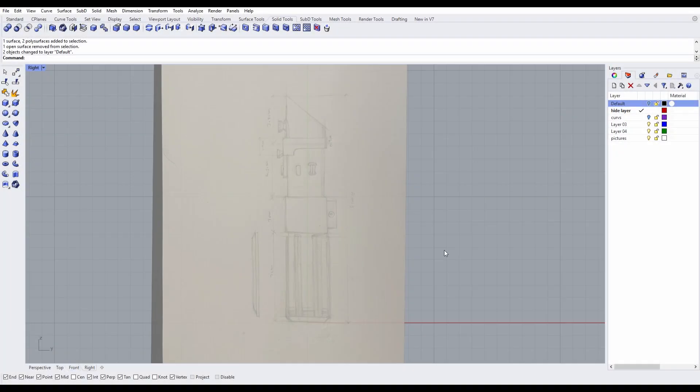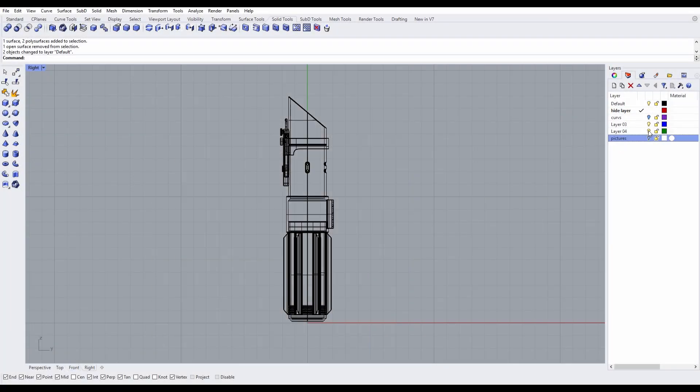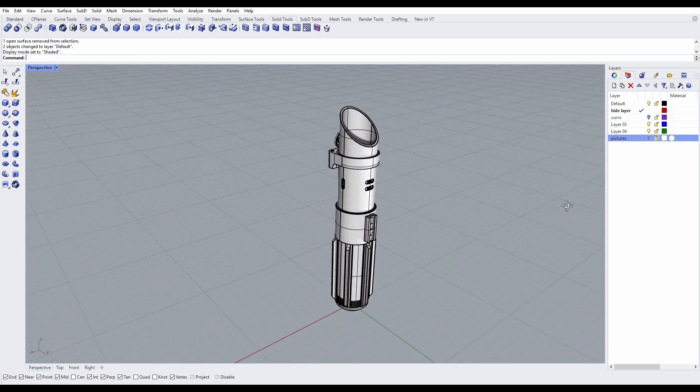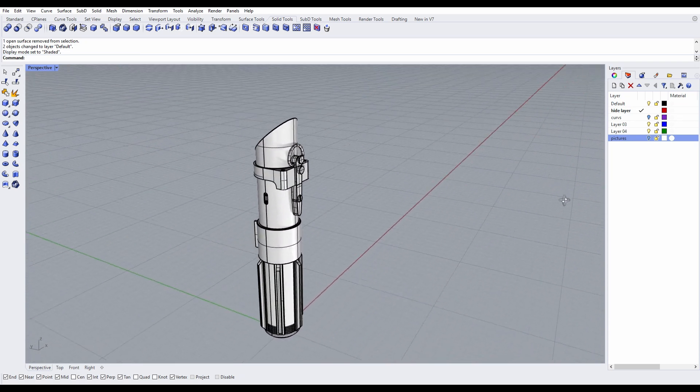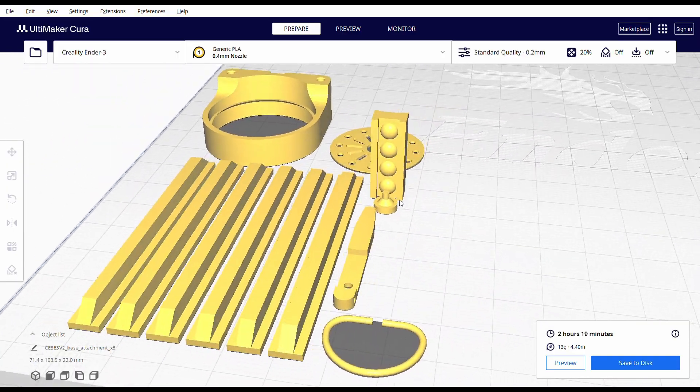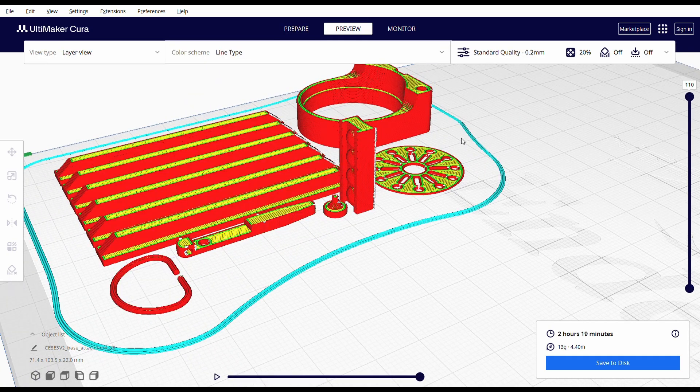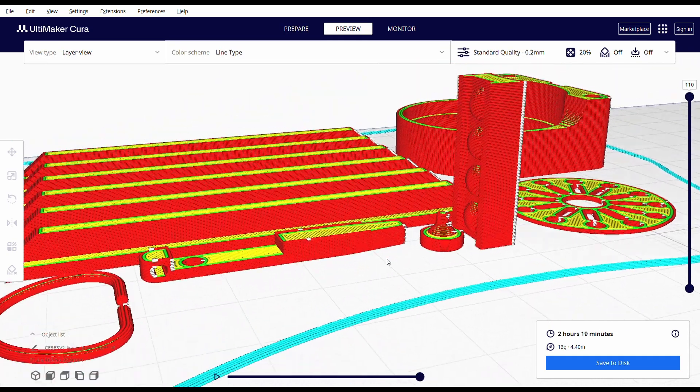The total length ended up being around 18 centimeters. The modeling software that I'm using is called Rhino 3D and it's probably the best modeling software out there in my opinion. Now I have exported these parts individually in STL format and separated the smaller and bigger parts to be printed separately.